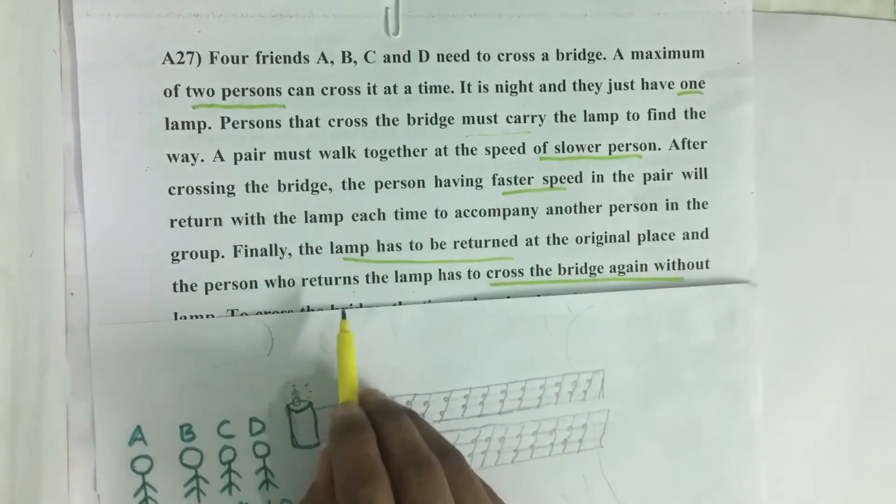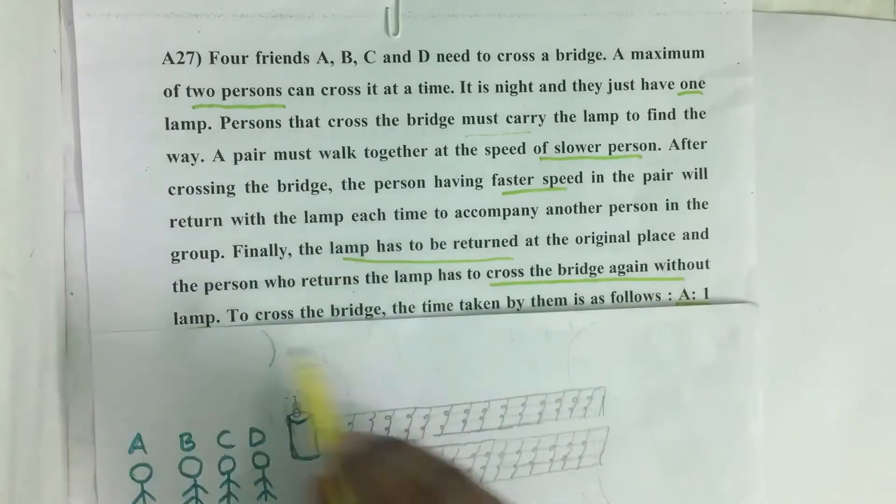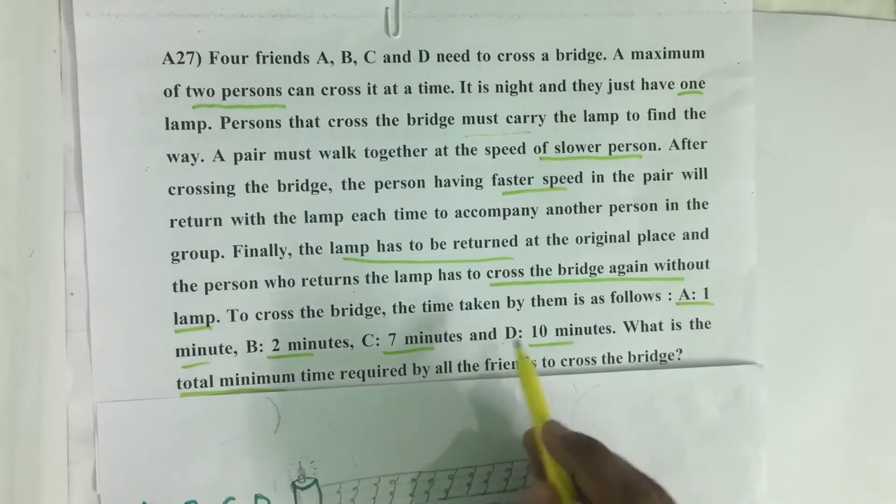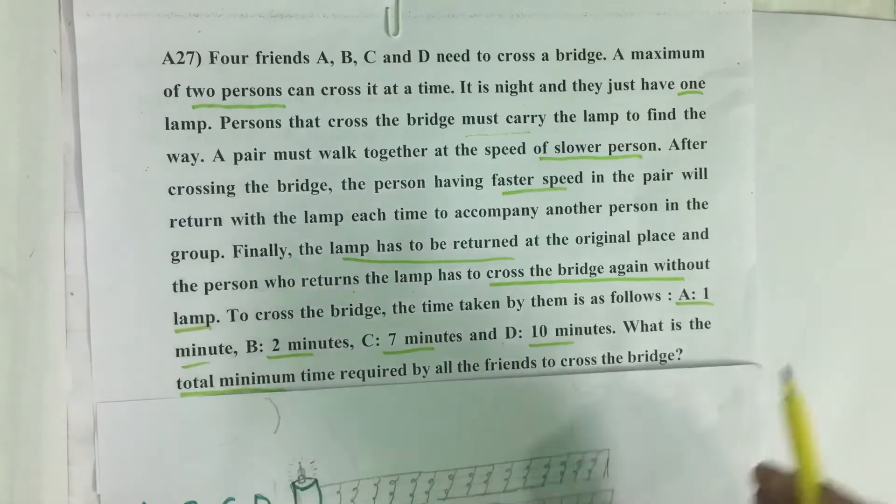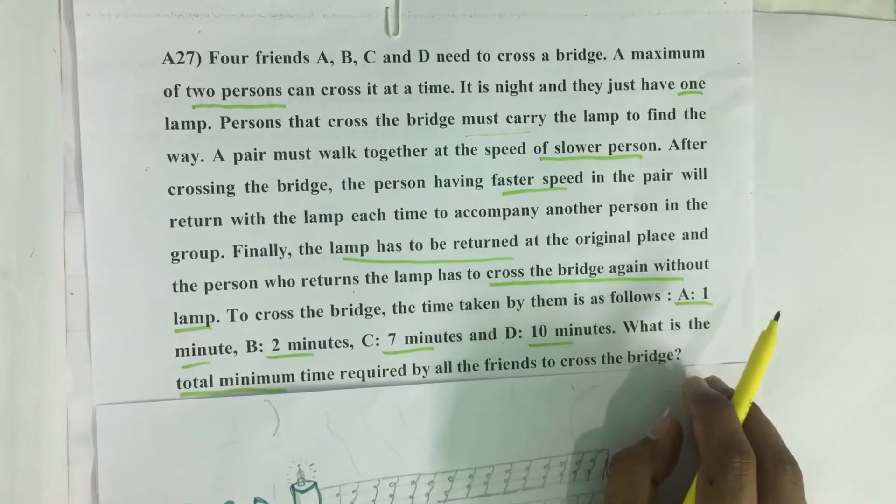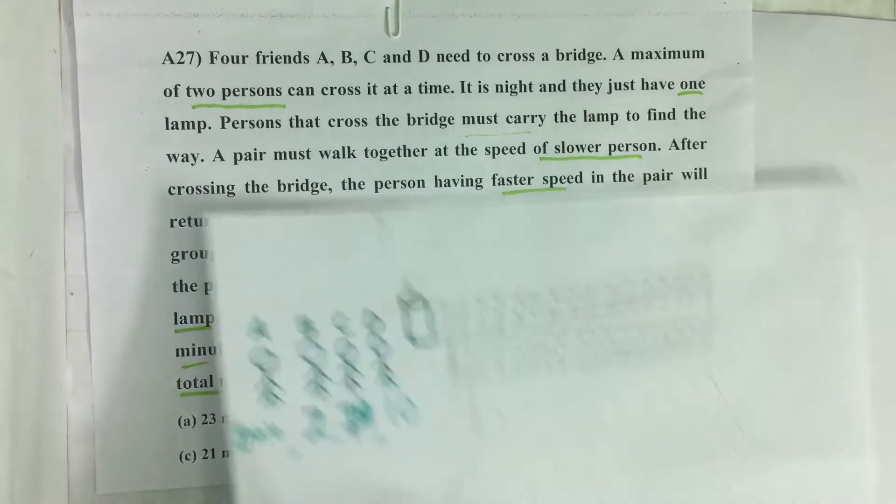Finally, the lamp has to be returned at the original place and the person who returns the lamp has to cross the bridge again without lamp. The time taken by them is as follows: A 1 minute, B 2 minutes, C 7 minutes, and D 10 minutes. What is the total minimum time required by all the friends to cross the bridge?